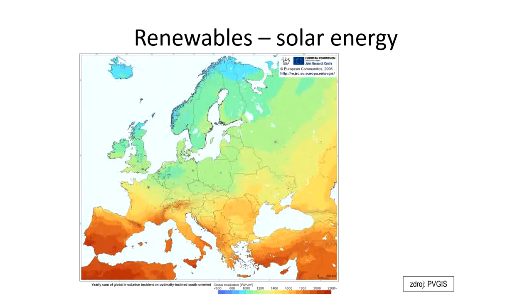Interestingly, you can see quite high values of solar irradiation in the Alps, which is due to the high altitude - higher portion of UV wavelength, probably lower cloud cover, and southern slopes. In northern Europe, such as northern Scandinavia or Iceland, values are around 900 kilowatt hours per square meter. However, this map doesn't say how much of that energy you are actually able to use in your system.